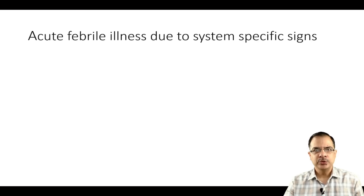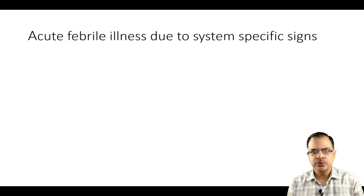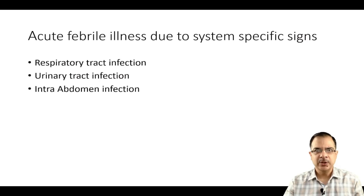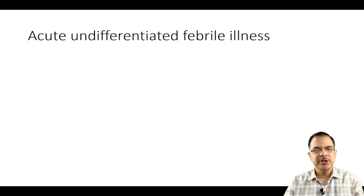Fever can be classified into three groups. The first is acute febrile illness due to systemic specific signs — fever which is due to localized infections like throat infections, upper respiratory infections, lower respiratory infections, urine infections, intra-abdominal infections, skin or soft tissue infections, or bone and joint infections. This represents localized or systemic specific involvement.